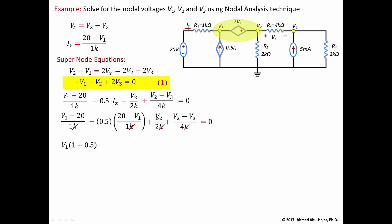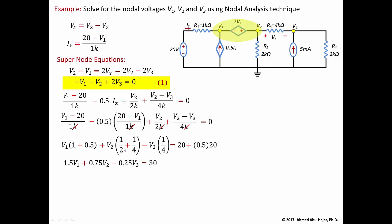Simplifying, the second supernode equation becomes: 1.5·v1 plus 0.75·v2 minus 0.25·v3 equals 30. That's 20 plus 10 equals 30 on the right side. This is the second equation of the supernode from summing currents leaving equal to zero.